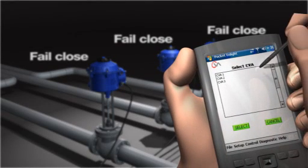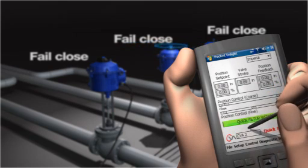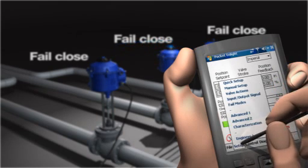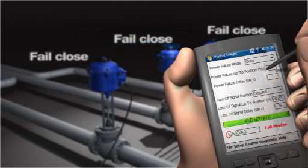The CVA can be programmed on loss of power to go to a predetermined position. These three actuators are preset as fail closed.